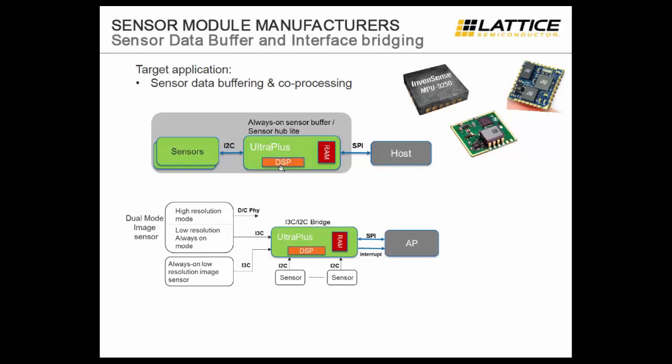Another example is a high-resolution EMET sensor connecting through an I3C interface to an UltraPlus device, then transmitting data through a SPI interface to an application processor. The UltraPlus is useful for its processing and buffering capability, as well as its ability to translate between multiple interfaces — I3C data comes in and gets bridged to a SPI interface. Additionally, various I2C sensors can be connected to UltraPlus, with lower-speed data bridged across all of these interfaces.